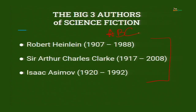Whenever we discuss science fiction, either we discuss the ABC of science fiction or we discuss the Big Three. The ABC — Asimov, Bradbury, and Clarke — was previously discussed. We have taken out Bradbury from that because Bradbury was mostly into fantastic narratives; his works were not strictly science-oriented.